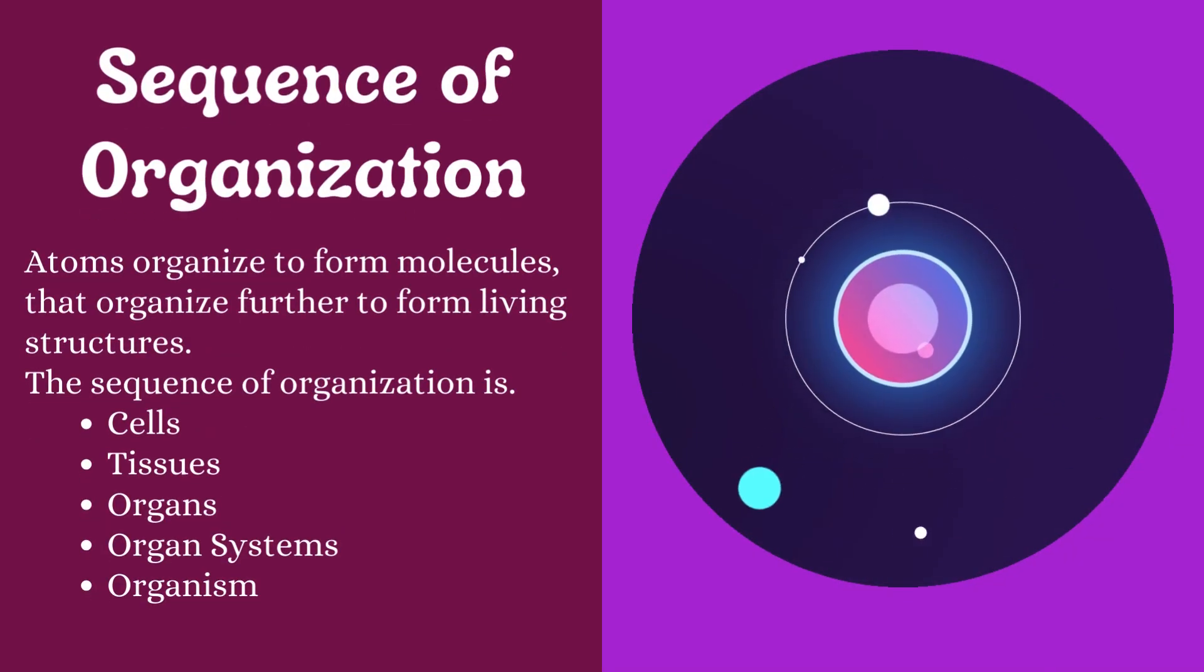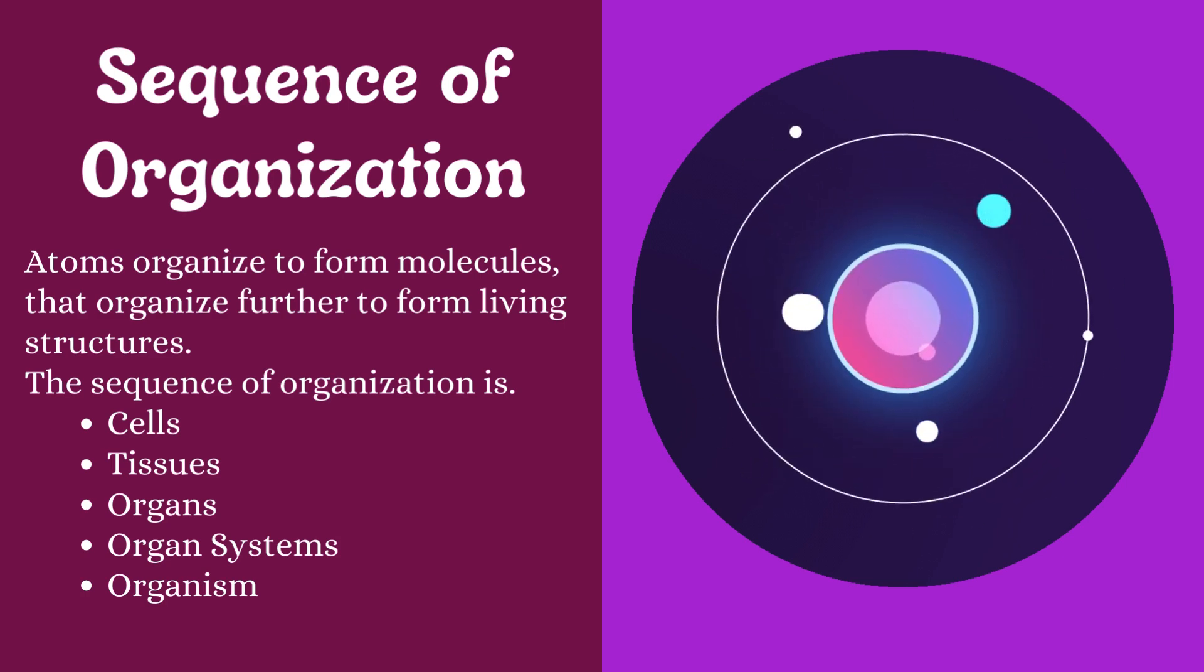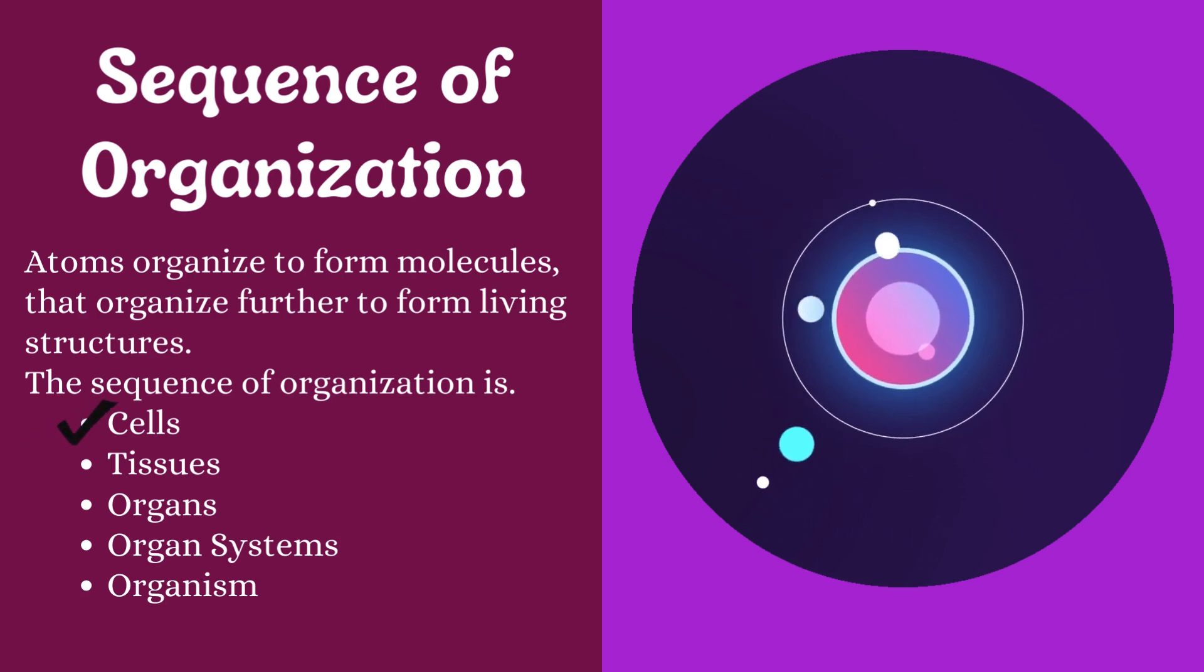Sequence of organization. Atoms organize to form molecules that organize further to form living structures. The sequence of organization is cells, tissues, organs, organ systems, organism.